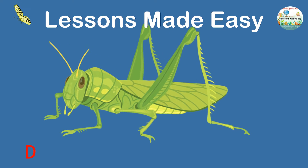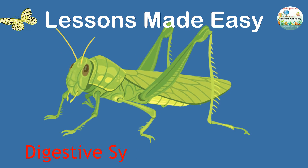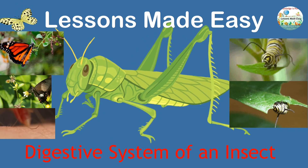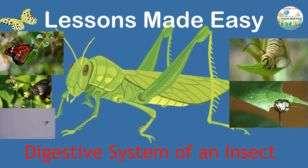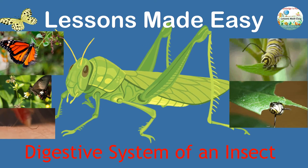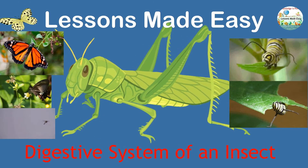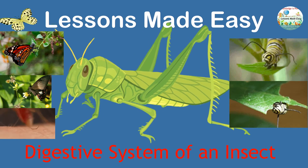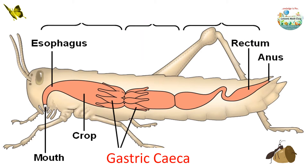Today, we will talk about the digestive system of an insect, particularly that of a grasshopper. We know that some insects feed on solid food, while others feed on liquid food. In this lesson, we'll find out what goes on in an insect body — what organs are involved in digestion and excretion of waste materials. So stay with me until the end of this video.